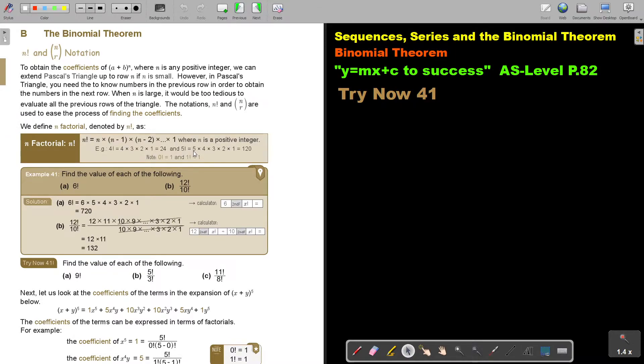So if it's 5, you start with 5, multiply 4, multiply 3, multiply 2, multiply 1. Note that 0 factorial is 1, and 1 factorial is also 1.